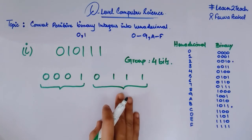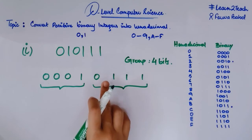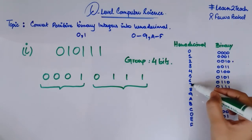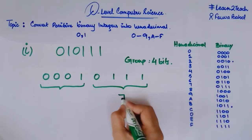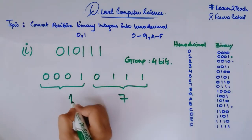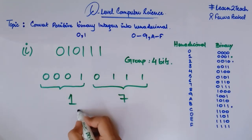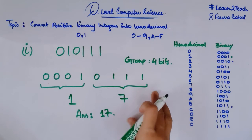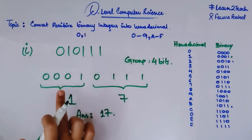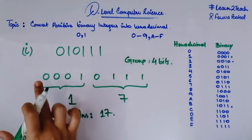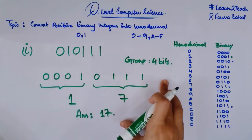Now I find the hexadecimal values. 0111 equals 7 in hexadecimal. For the second group with the added zeros, 0001 equals 1 in hexadecimal. So the answer is 17. If you are missing bits to complete a group of four, just add zeros on the left.